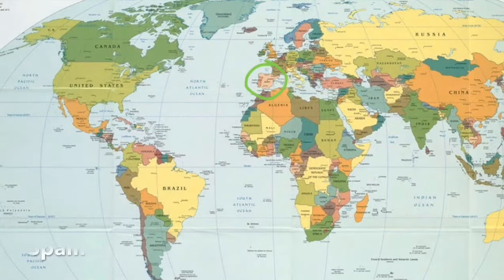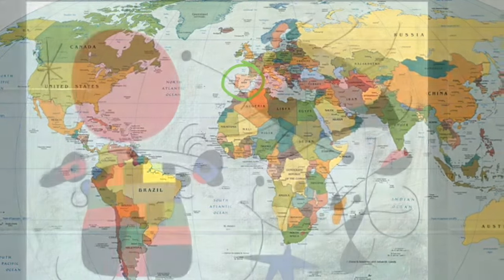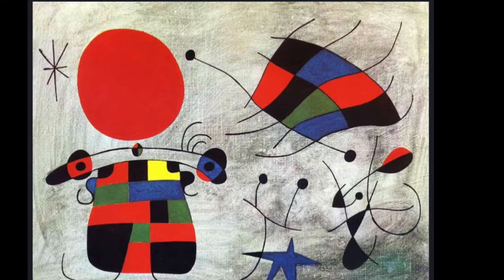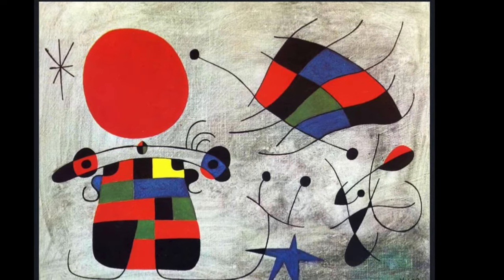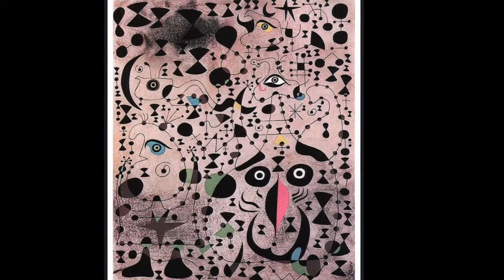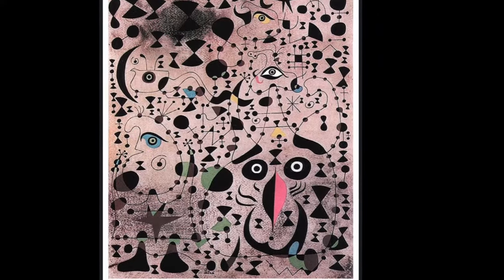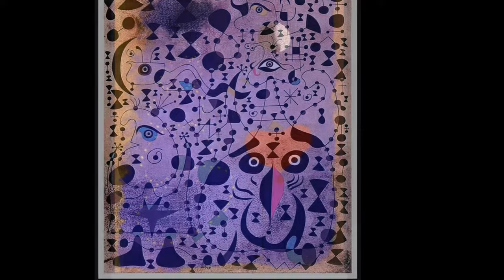Our first artist is Juan Miró and he is from Spain. He is known for his automatism and surrealism artwork where he uses organic forms that are flat and sharp lines to create his work.